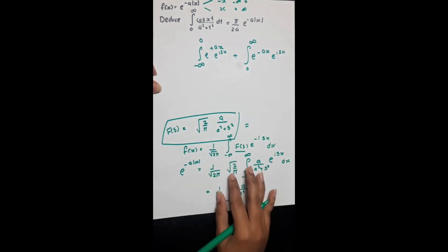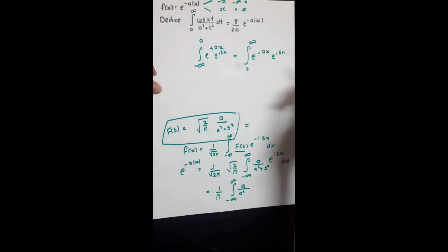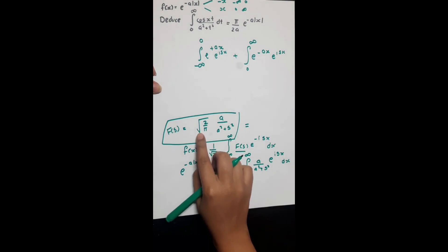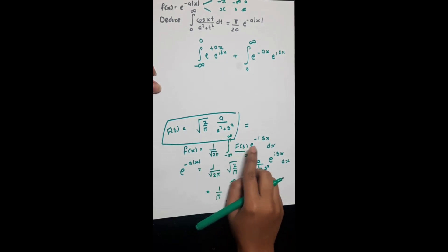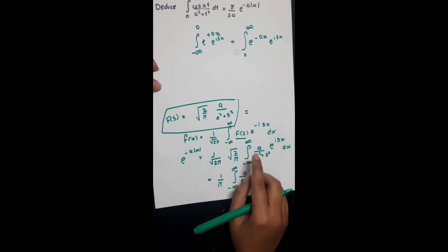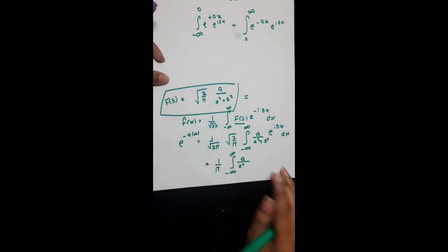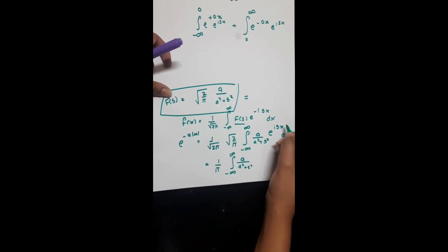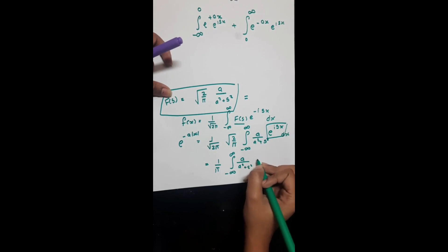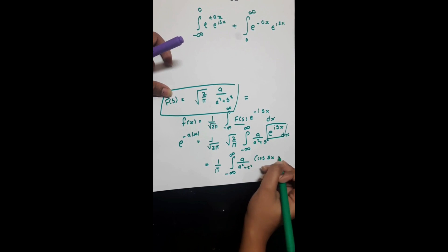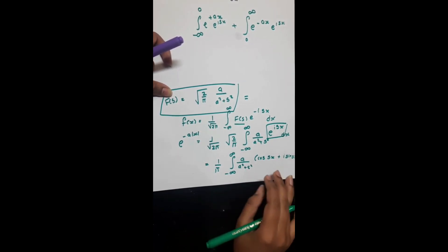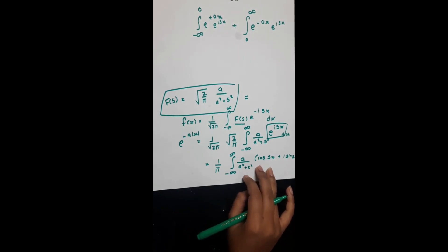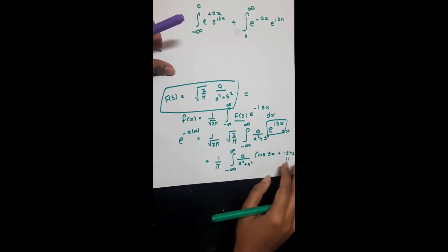The main task in this question is to deduce an integral result. To deduce something, we always use the inverse Fourier transform. Applying the inverse Fourier transform formula gives: f(x) = (1/√(2π)) · integral from −∞ to ∞ of F(s) · e^(−isx) ds. Substituting F(s) and expanding e^(isx) as cos(sx) + i·sin(sx) — since sin(sx) is an odd function, its integral over the symmetric domain equals zero.